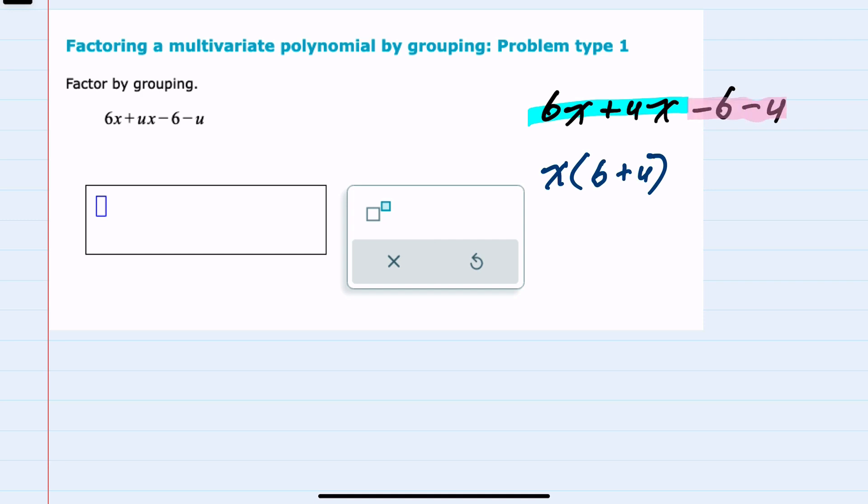For the second two terms, I have a 6 and a u, so there's no common factors that I can factor out. But I do notice that they're both negative, so I could factor a negative out of each one of those, and that would leave me with a positive 6 and a positive u. From here I can see that my two new terms have a common 6 plus u.